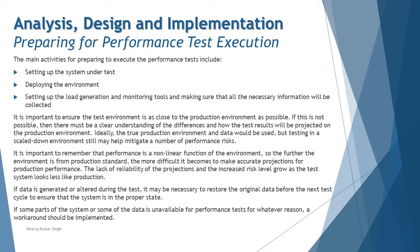If data is generated or altered during the test, it may be necessary to restore the original data before the next test cycle to ensure the system is in the proper state. The golden rule of automation is that where you start your script, you should end at the same point so the application is in the right state. If test data has been updated due to your activities, make sure it is restored to the initial state before the next test run. If some part of the system or data is unavailable, a workaround should be implemented as a temporary solution so it does not act as a blocker.